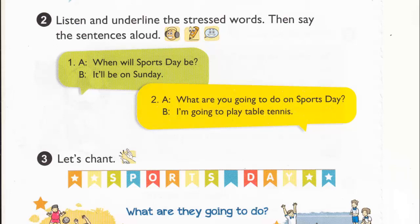Activity 2. Listen and underline the stressed words, then say the sentences aloud. When will sports day be? It'll be on Sunday. What are you going to do on sports day? I'm going to play table tennis.